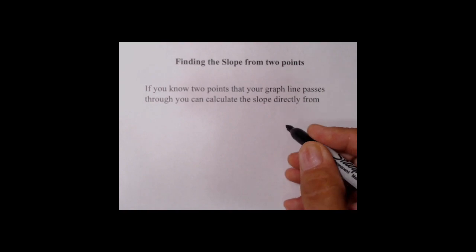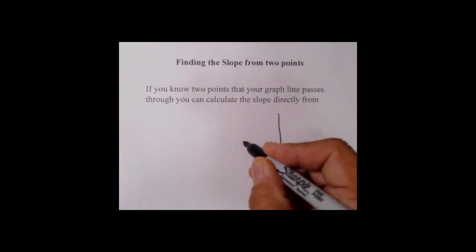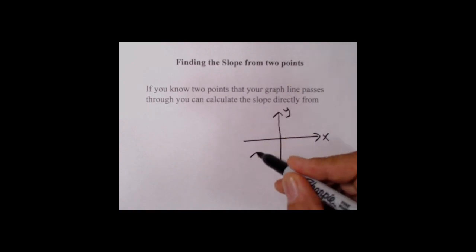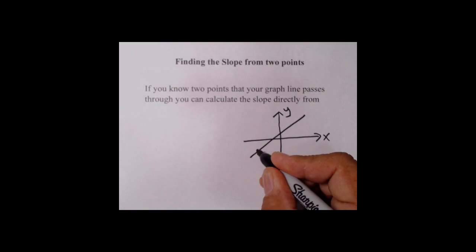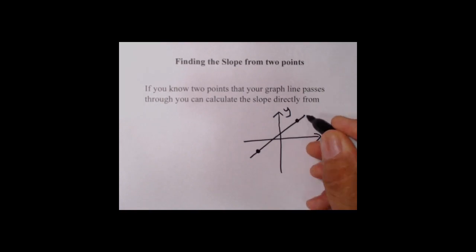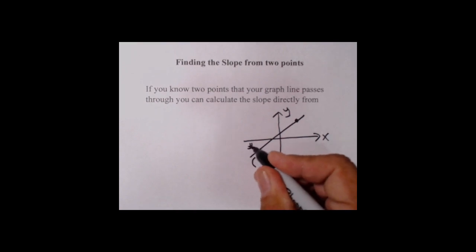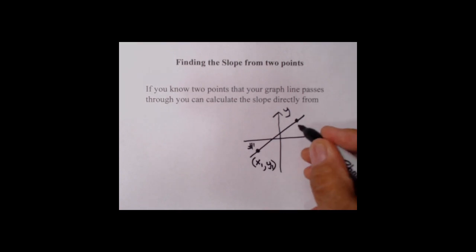Here's the idea. We're going to have an XY grid like this, and we got a line going through here, say like this. There'll be a couple of points on this line that are given to us, and we'll call this point number one with coordinates X1, Y1. This is point number two up here with coordinates X2 and Y2.